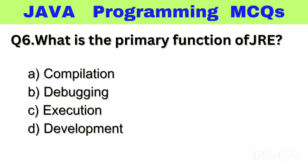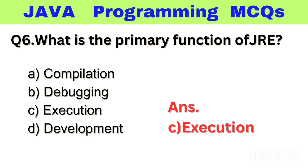Question number 6. What is the primary function of JRE? Option A: Compilation, B: Debugging, C: Execution, D: Development. The right answer is option C, Execution.